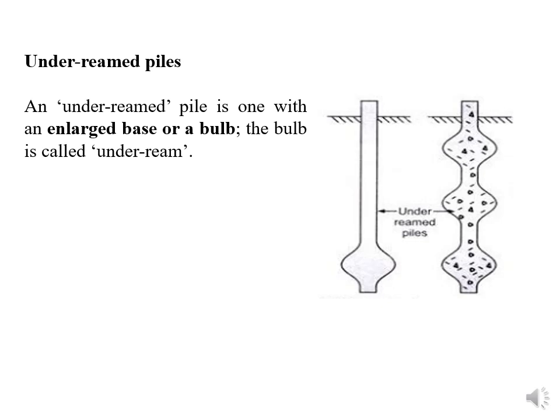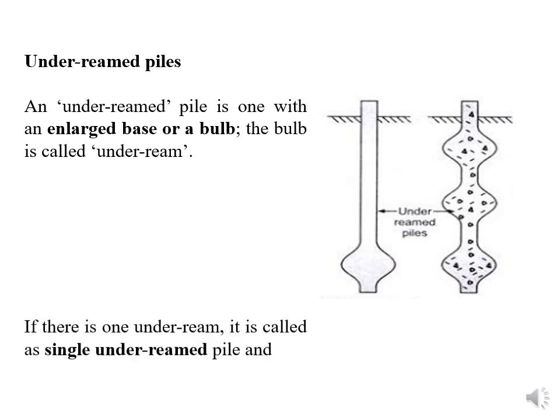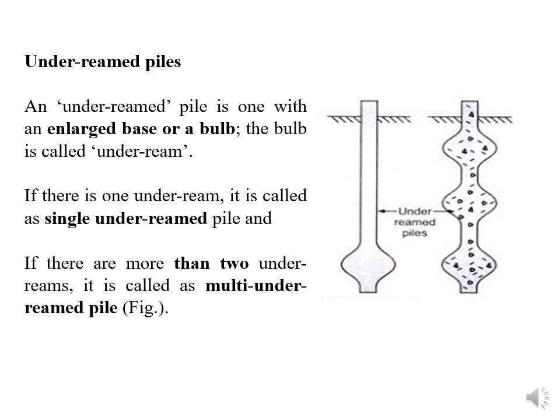In this figure you can see three underreamed piles. If there is one underream, it is called a single underreamed pile. And if there are more than two underreams, it is called multi-underreamed piles.